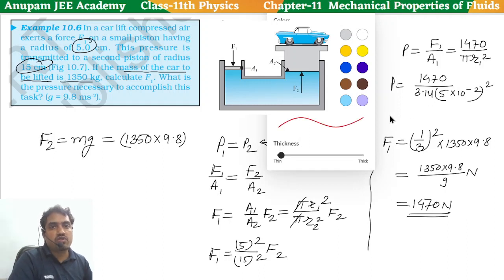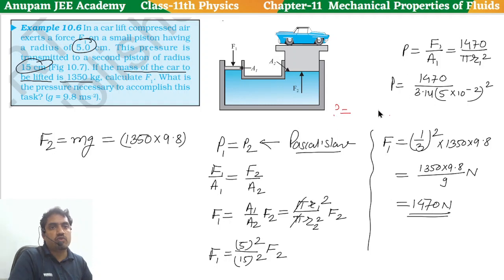Pressure P equals, we will solve this. This will be 1470 divided by 3.14 into 25 into 10 to power minus 4. This is 1470 divided by 3.14 divided by 25. We will get 1.87 into 10 to power 5 Pascal.